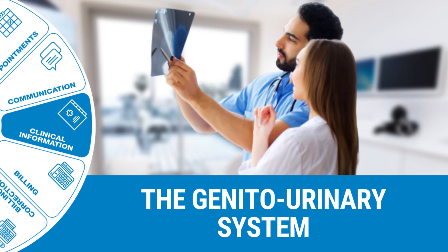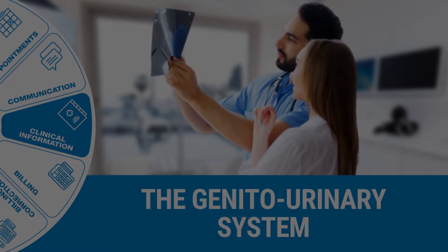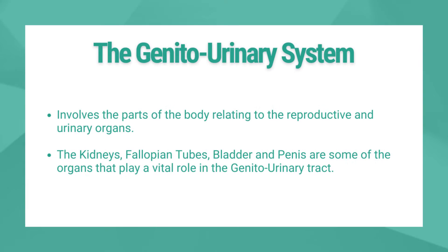Welcome to this tutorial video. The goal of this video is to go over the genitourinary system. Genitourinary involves the parts of the body relating to the reproductive and urinary organs. The kidneys, fallopian tubes, bladder, and penis are some of the organs that play a vital role in the genitourinary tract.